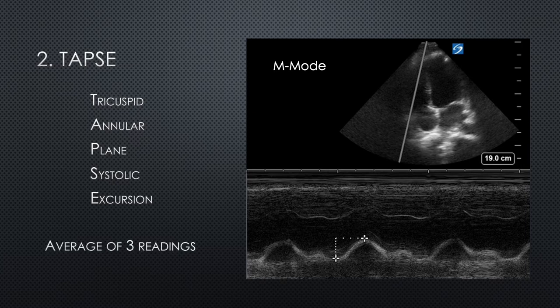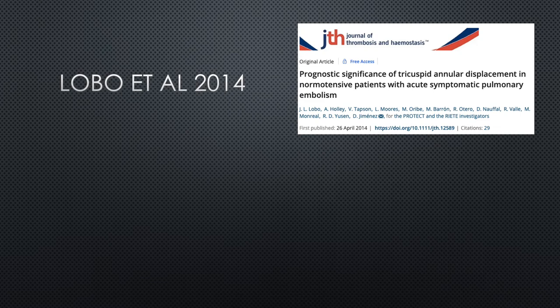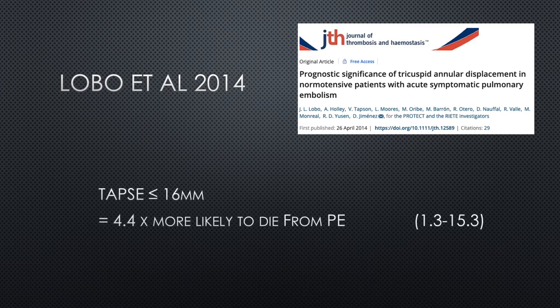You should take an average of three readings, and 16 millimeters or less is considered abnormal. TAPSE may also have a role in predicting outcome in PE. Lobo and colleagues found that a TAPSE of 16 or less means you're more than four times more likely to die from your PE, and this was statistically significant. So in a patient with a confirmed PE, if you find a TAPSE of say 10 or 12, perhaps this should trigger referral to critical care even regardless of the troponin or BNP.